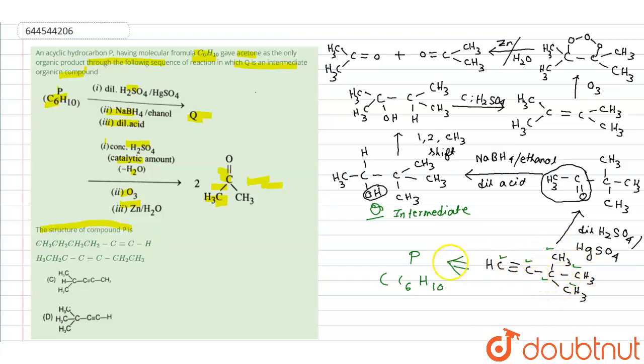The compound has 6 carbon atoms and 10 hydrogen atoms, with 3 methyl groups — each methyl group containing 3 hydrogens — giving a total molecular formula of C6H10, which matches exactly.